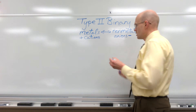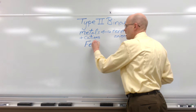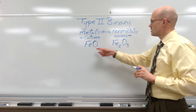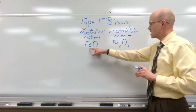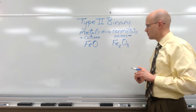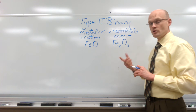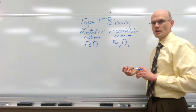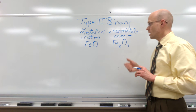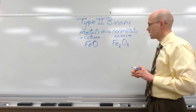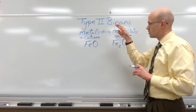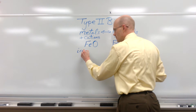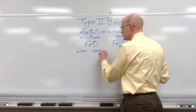Here are two example compounds: FeO and Fe₂O₃. Both contain iron and both contain oxygen, but iron is a transitional metal, so it forms cations whose charge will vary from compound to compound. We have to recognize that. When we use transitional metals, we name them similarly to Type 1 compounds — we still identify the two elements involved, which here are iron and oxygen in both compounds.